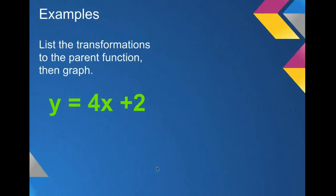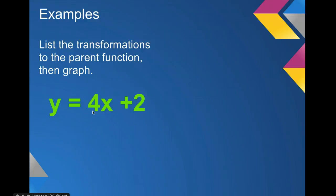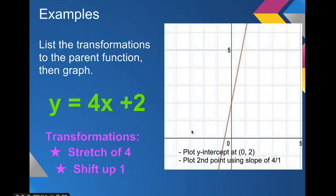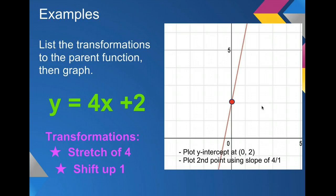Number 2. In this example, we have two transformations: a 4 in front of the x and a 2 on the end. The 4 is our stretch or shrink — since it's greater than 1, it's a stretch of 4. The 2 at the very end is our b-value, which is a shift up of 2. When we graph this, plot the y-intercept at 0, 2. Then plot the second point using slope of 4 over 1 — go up 1, 2, 3, 4 and over 1.